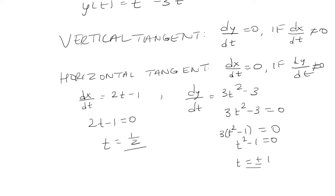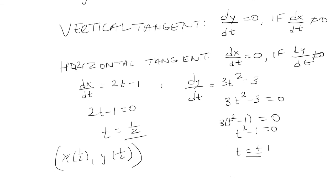And now we need to find what the actual value is. So if t is one half, we want to find x of one half and y of one half to actually find the point. And then same thing with t equals plus or minus 1. We need x of one, y of one, and then x of negative one, y of negative one.